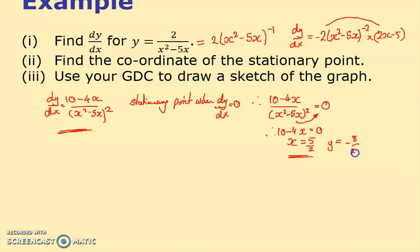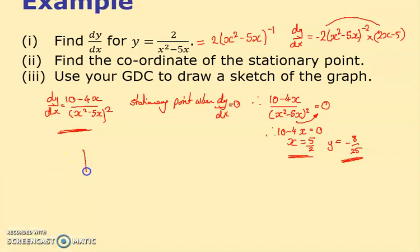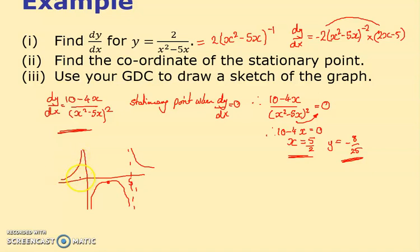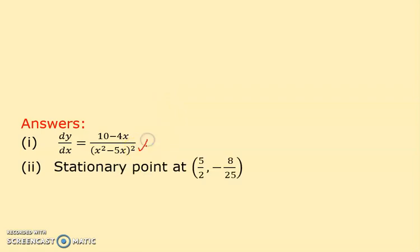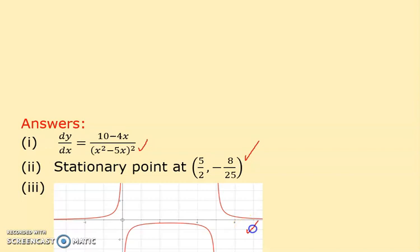Now it says sketch the graph using your GDC. I haven't got my graphical calculator, so I'll use Desmos. According to Desmos, when I typed it in, the graph looks like this — it's between 0 and 5, with a maximum point, and it seems to have a couple of asymptotes, one at x=0 and one at x=5. The stationary point looks right.